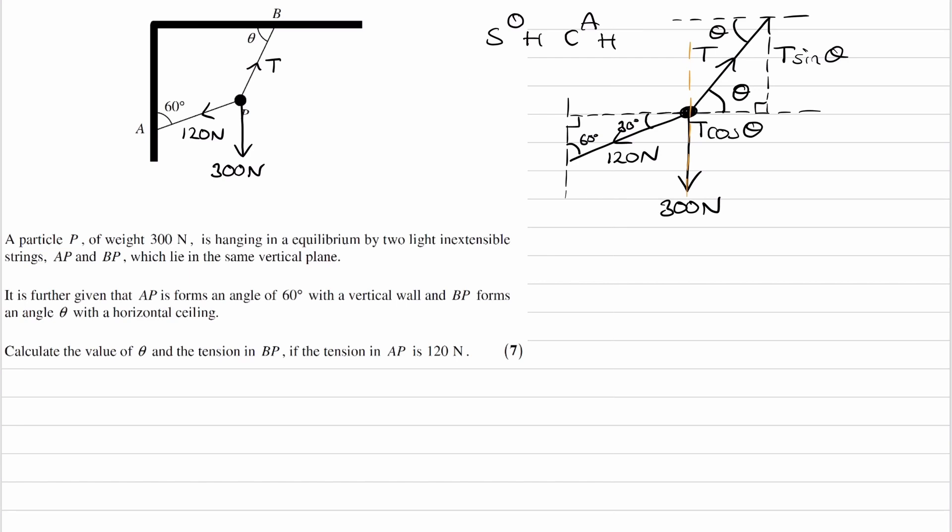And if you're not sure about how this works, draw out a triangle with this being theta and this being T, and then do the normal Soh Katoa rule, so sine theta would be equal to opposite over hypotenuse. Bring the T over, and you get T sine theta is equal to the opposite.